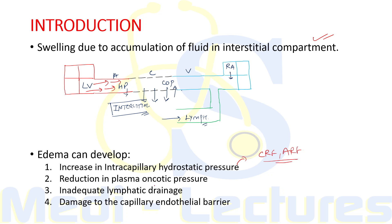Then there can be reduction in plasma oncotic pressure which can occur due to protein malnutrition, chronic liver disease, or with nephrotic syndrome. Then there can be inadequate lymphatic drainage which can occur due to obstruction, due to any infection, trauma, or surgery.